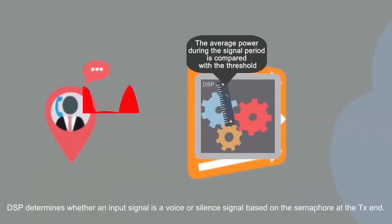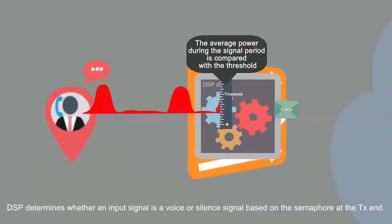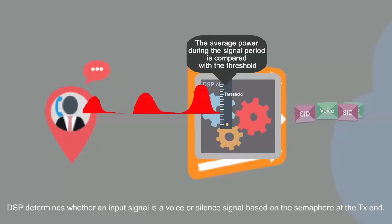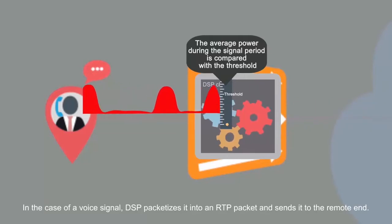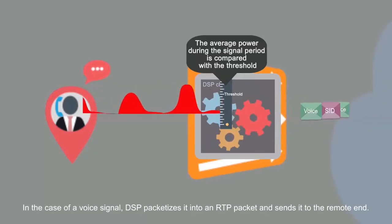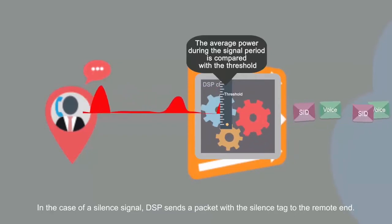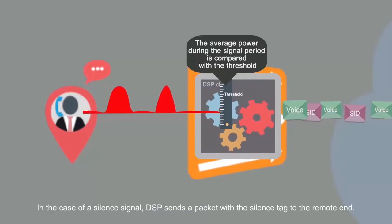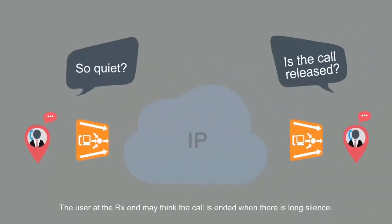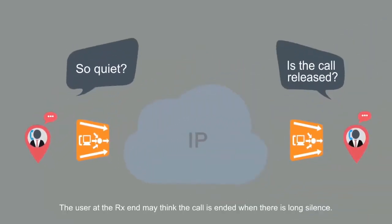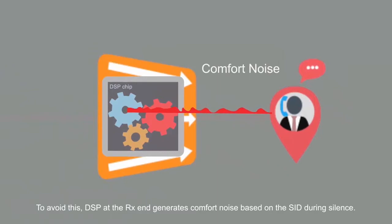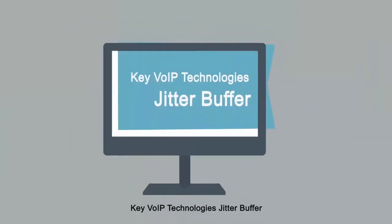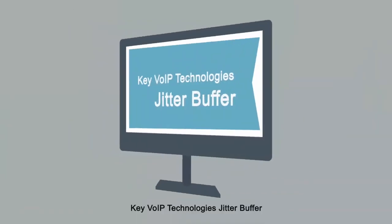DSP determines whether an input signal is a voice or silence signal based on the semaphore at the transmit end. In the case of a voice signal, DSP packetizes it into an RTP packet and sends it to the remote end. In the case of a silence signal, DSP sends a packet with a silence tag to the remote end. To prevent the user at the receive end from thinking the call has ended during long silence, DSP at the receive end generates comfort noise based on the SID during silence.